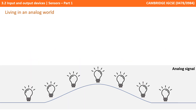We live in an analogue world. All of our perceptions, from sound to touch and sight, can be measured on a continuous, sinuating line. Take this simple example of turning a light on and off again. To us, it might appear that the light immediately changes from one state to another. If we could slow time down, however, we would notice a gradual increase of light, followed by a gradual decrease, which can be represented by the curved line.